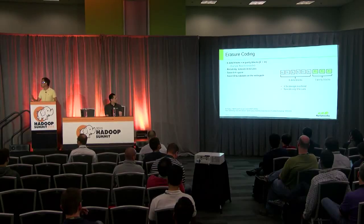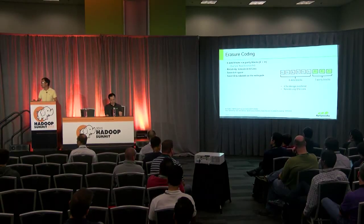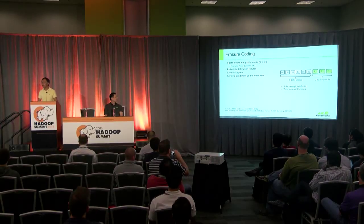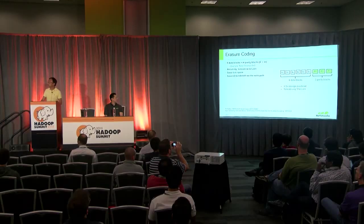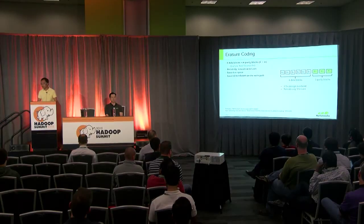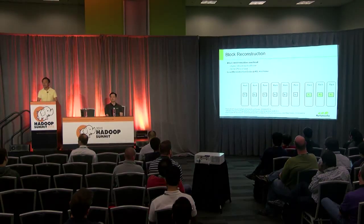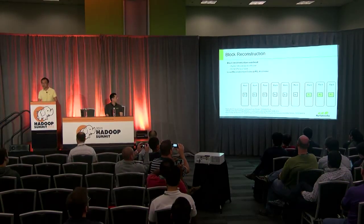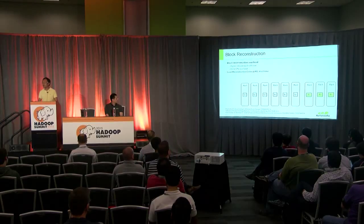Erasure coding still provides pretty good data reliability. For a 6+3 setup, we can tolerate any three failures. If we lose blocks b1, b2, b3, we bring in parity blocks p1, p2, p3, collect all six remaining blocks for decoding, and reconstruct b1, b2, b3. There are trade-offs: we always need CPU for encoding and decoding, and block reconstruction for erasure coding is very expensive.